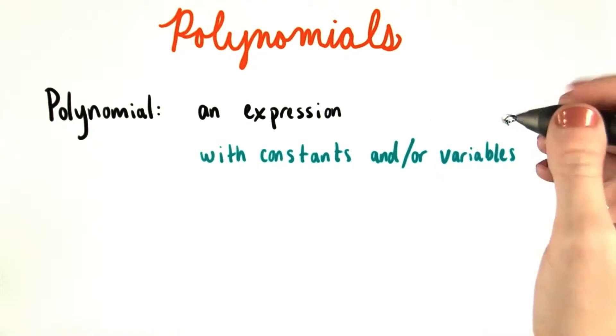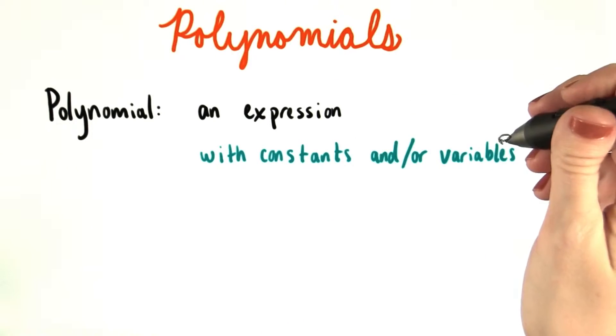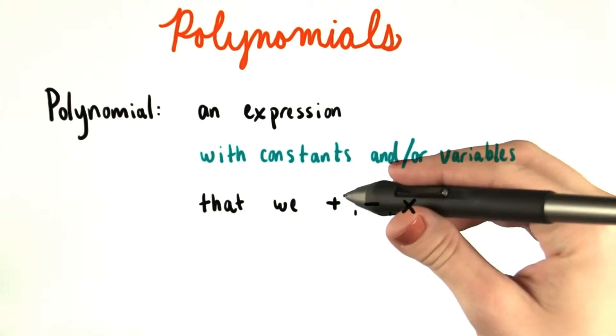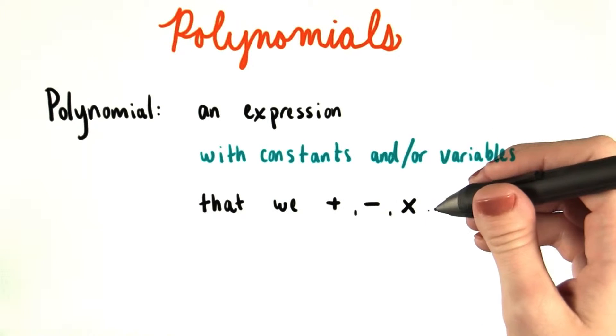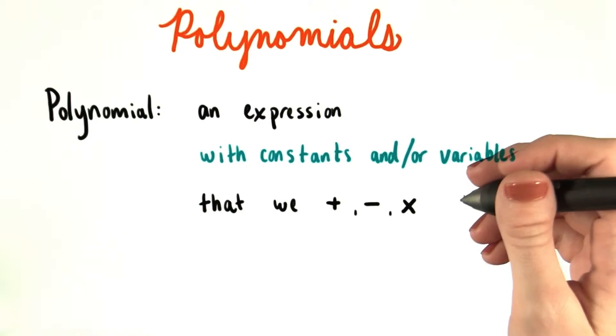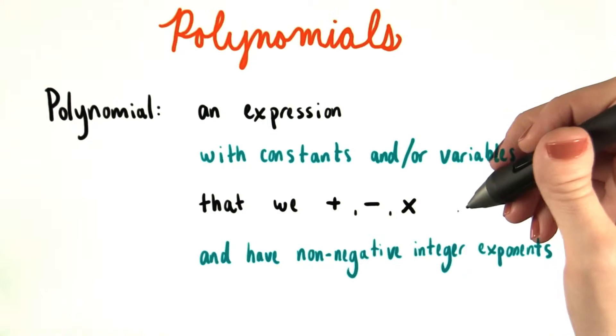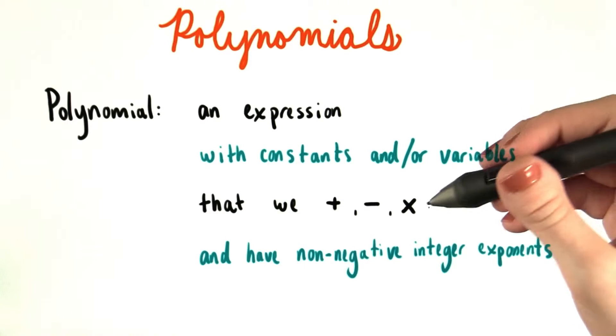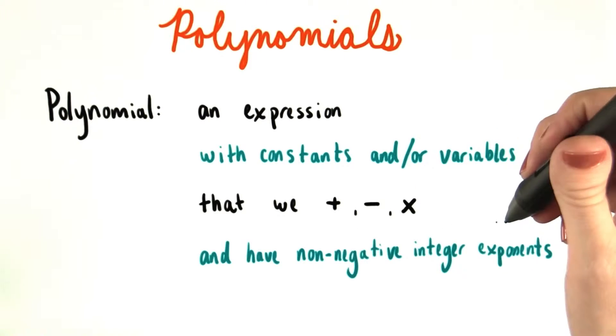A polynomial is an expression made up of constants, variables, or both that are combined using addition, subtraction, or multiplication. So this basically means that we have one or more terms, like we've talked about before, added together. The variables in a polynomial also have to have non-negative integer exponents.